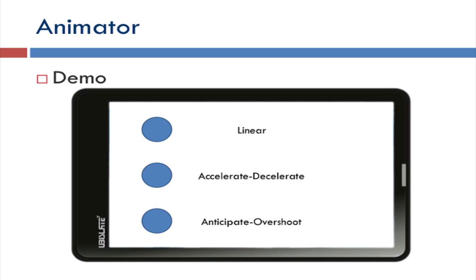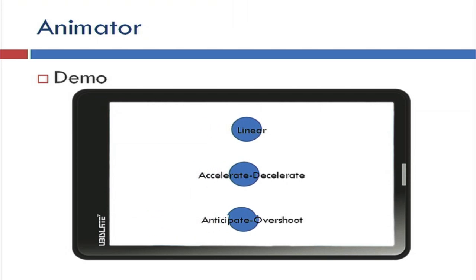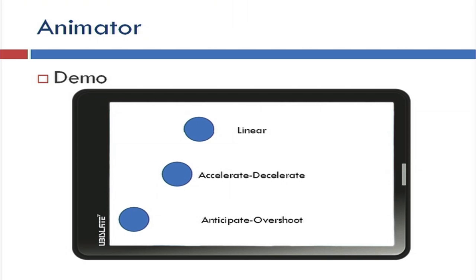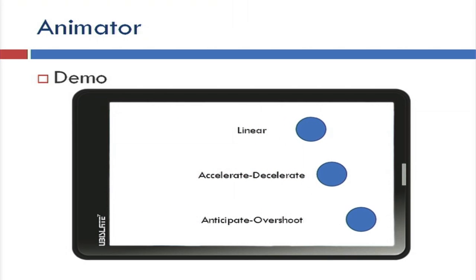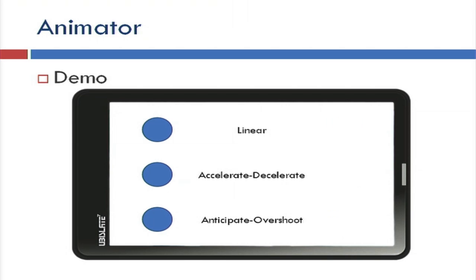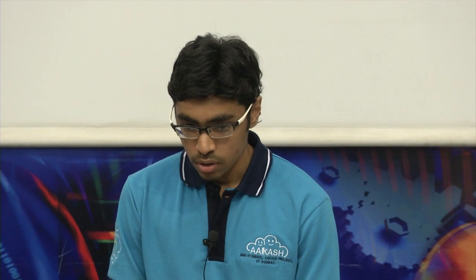This is the small on-screen demo showing that the linear interpolation goes linearly during the entire duration. In accelerate-decelerate there is a speed-up in between start and end. In anticipate and overshoot, the start and end values go beyond the specified range — for example, going a little behind and then a little past the specified values.